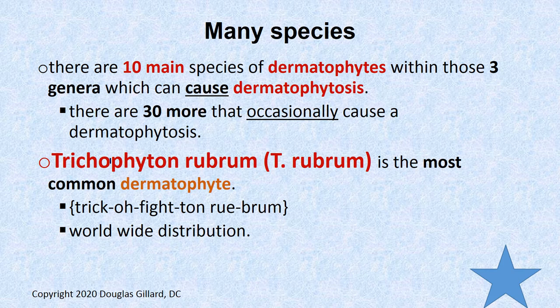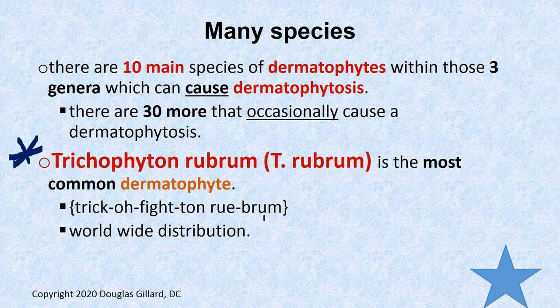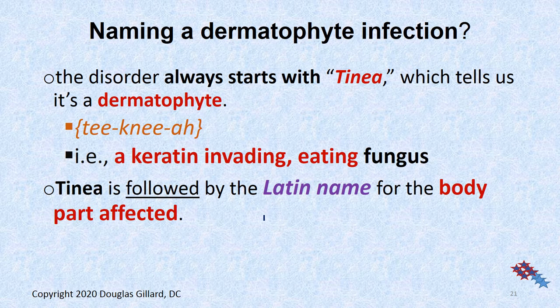The king, by far, is the one called T. rubrum — Trichophyton rubrum — which is the most common by far and causes quite a few infections, athlete's foot for example. Let's stay on the slides.